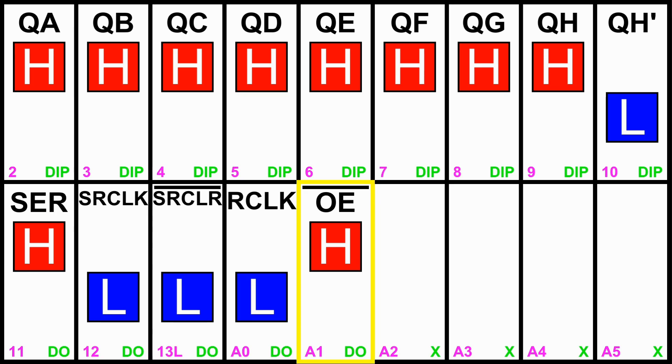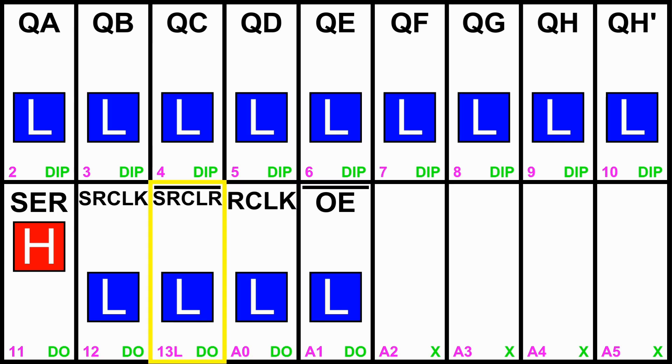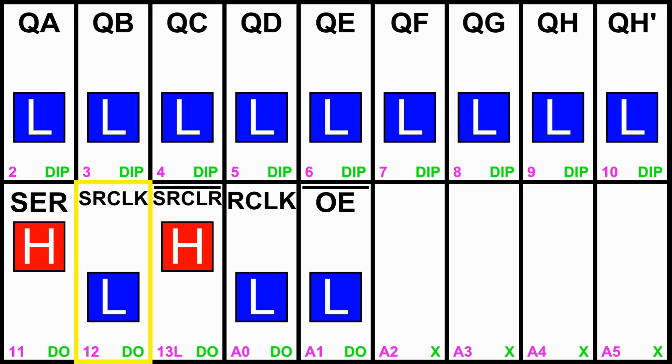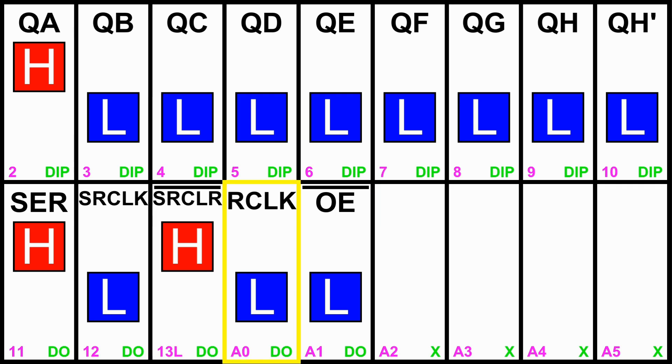So the output enable controls the tri-state of the outputs. Serial clear clears the internal serial register. Serial clock shifts serial into the internal serial register. And then R clock will make the internal serial register update the output register. It might feel like there's a lot of moving parts, but if you conceptualize it as two registers in one, it's really easy. You've got a shift register and then you've got a data register as a buffer. It's essentially a buffer, but there you go. So that's all there is to it. So I will be seeing you.